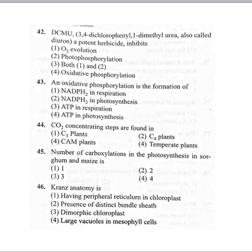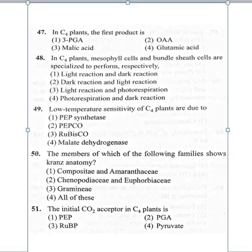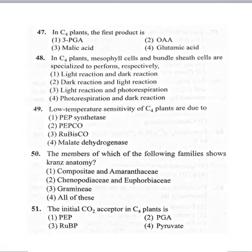Coming to the 47th question: in C4 plants, the first product is option 1 3-PGA, option 2 oxaloacetic acid (OAA), option 3 malic acid, option 4 glutamic acid. In C4 plants, the first stable product is oxaloacetic acid (OAA). In C3 plants, the first stable product is 3-PGA. So for the 47th question, the correct option is 2 — OAA.